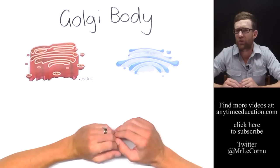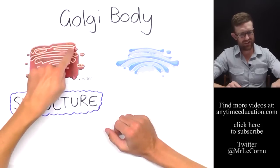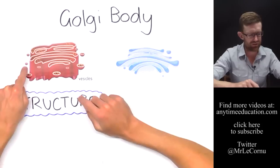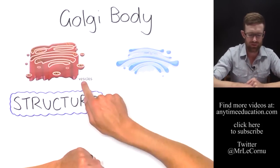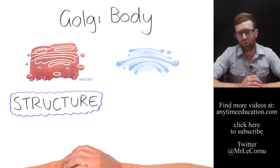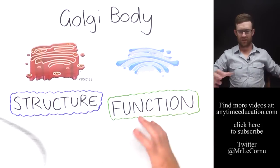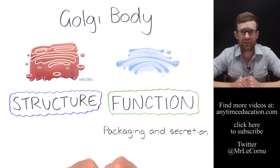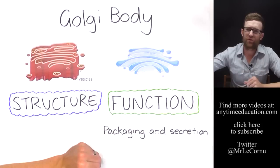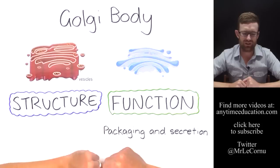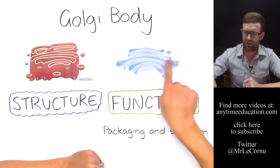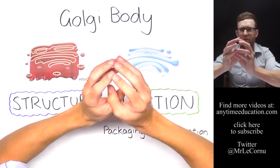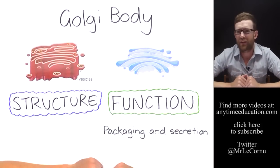The next organelle is the Golgi body, also referred to as the Golgi apparatus. Its structure consists of simple membrane sacs and membrane-enclosed parcels called vesicles. The function of the Golgi body is packaging and secretion of things like proteins and carbohydrates that have been produced by the cell and are being shipped off to leave the cell. They get packaged into vesicles, which then bind with the cell membrane and release the products outside the cell — that's called exocytosis.